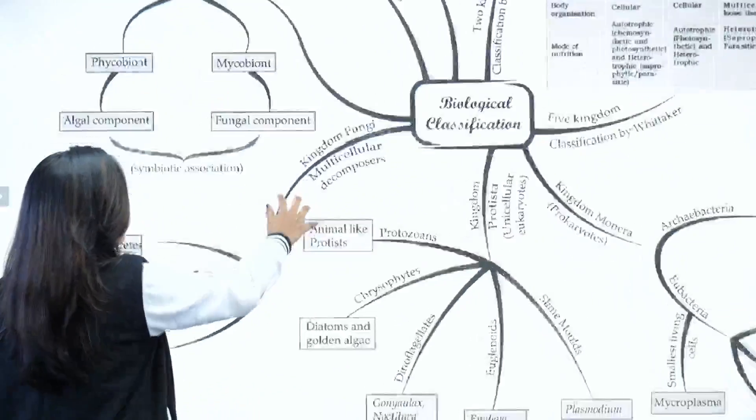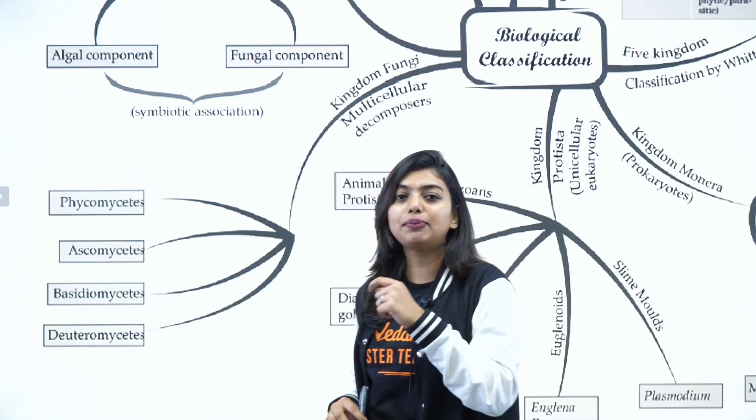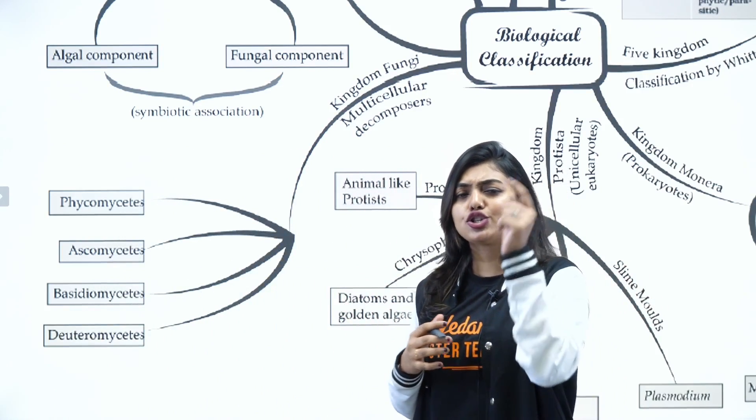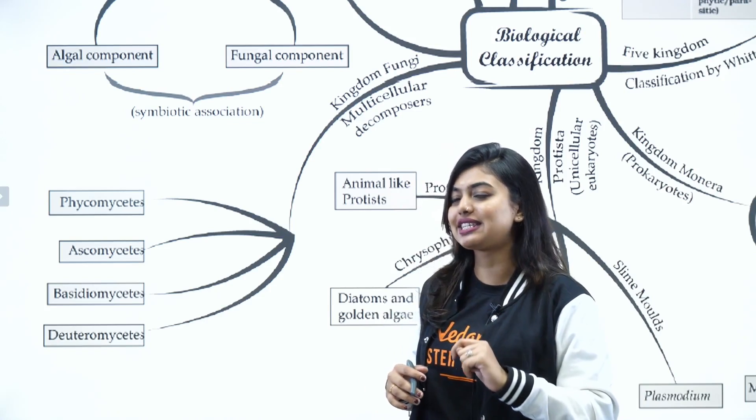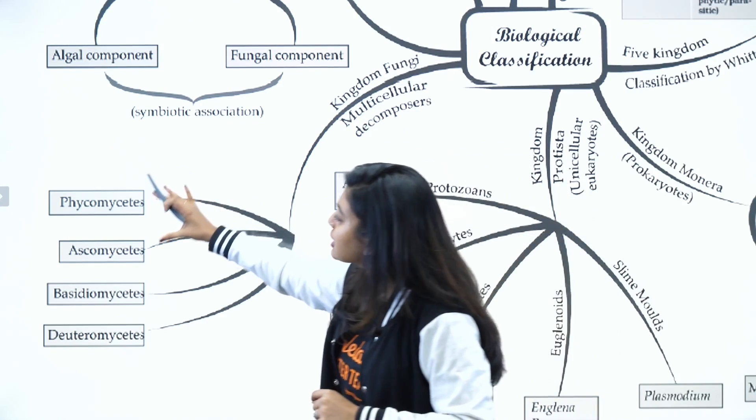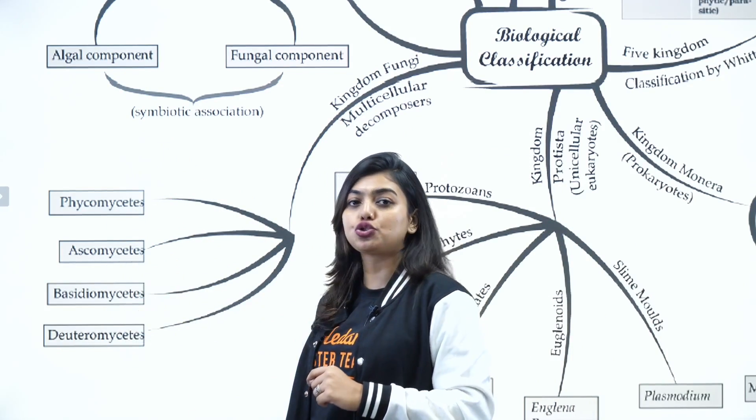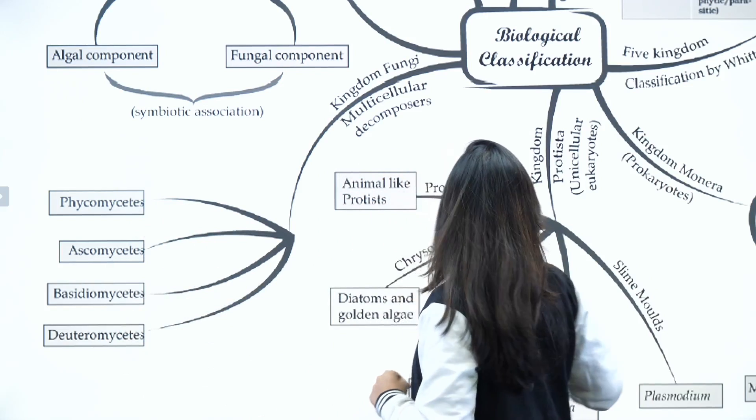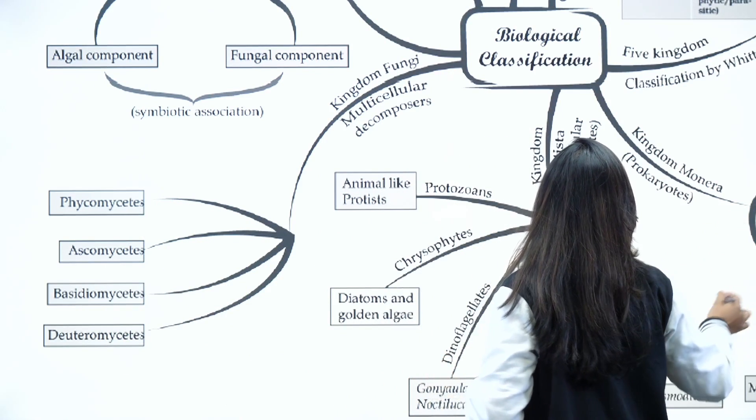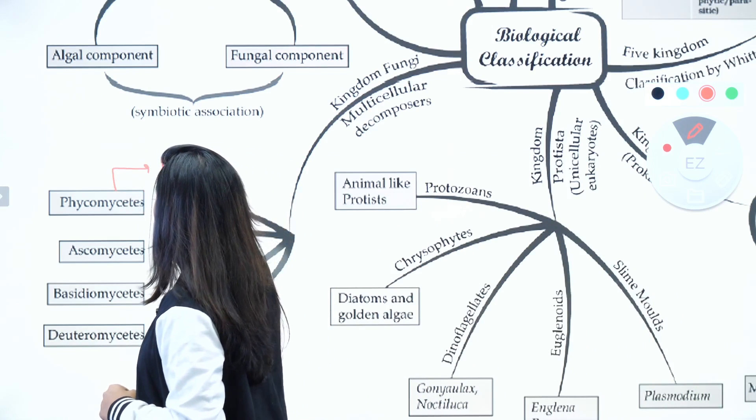The next thing that you need to remember is about Kingdom Fungi. Kingdom Fungi was a very tricky part because Kingdom Fungi did not have a place anywhere in other kingdoms, so Kingdom Fungi was given a kingdom by itself. Kingdom Fungi is multicellular decomposers and it is classified into Phycomycetes, Ascomycetes, Basidiomycetes, and Deuteromycetes. Phycomycetes is the most simpler one and the example you can remember is Mucor.